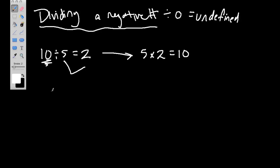Now with negative numbers, same idea. If you have negative 10 divided by 5, we know this equals negative 2. The reason is because 5 times negative 2 is the inverse operation of multiplication and brings us back to negative 10.